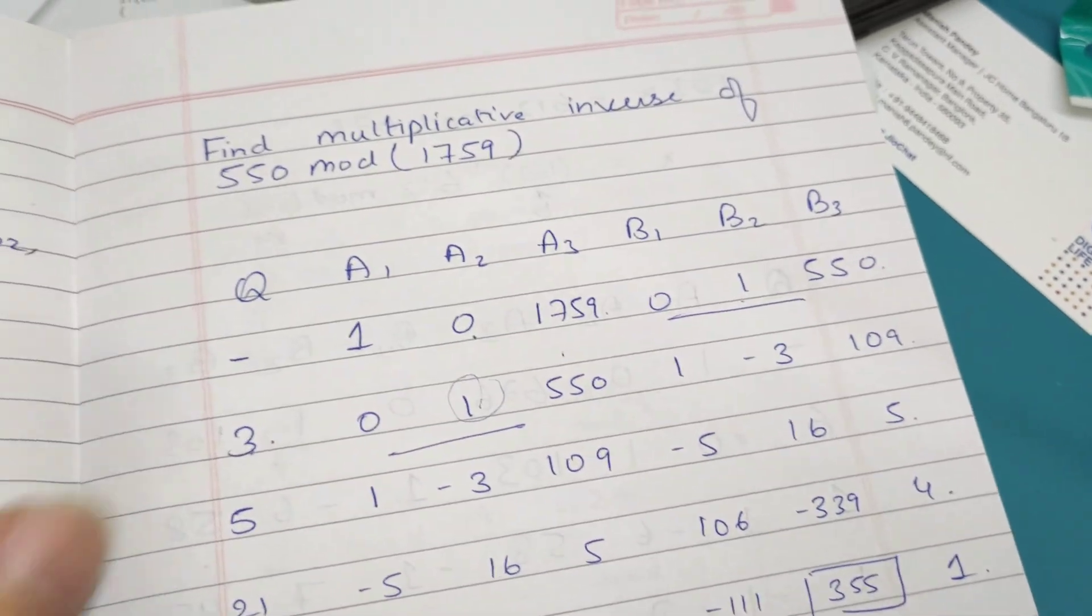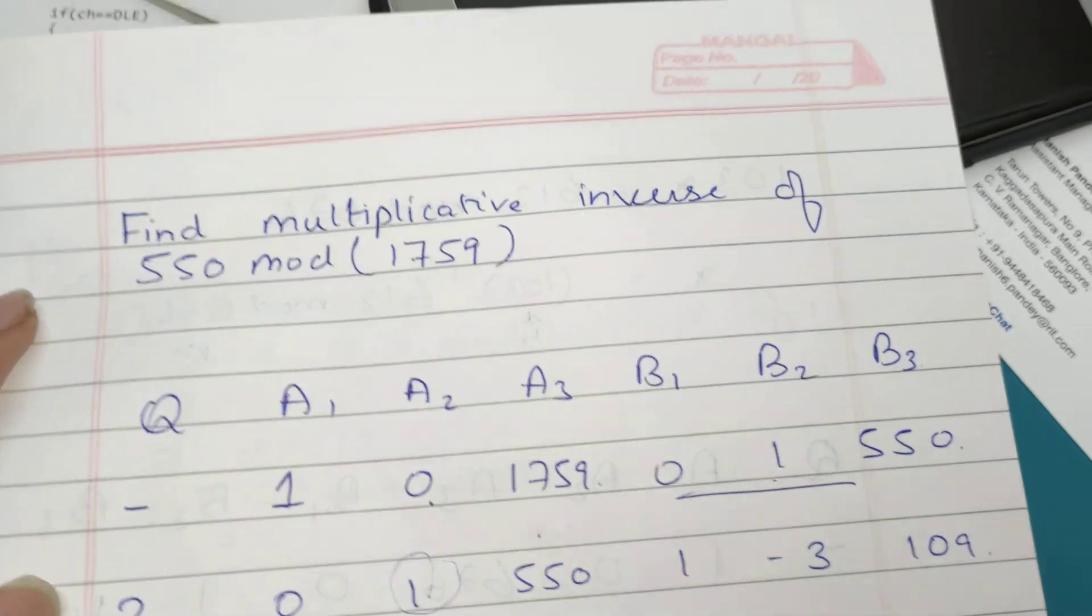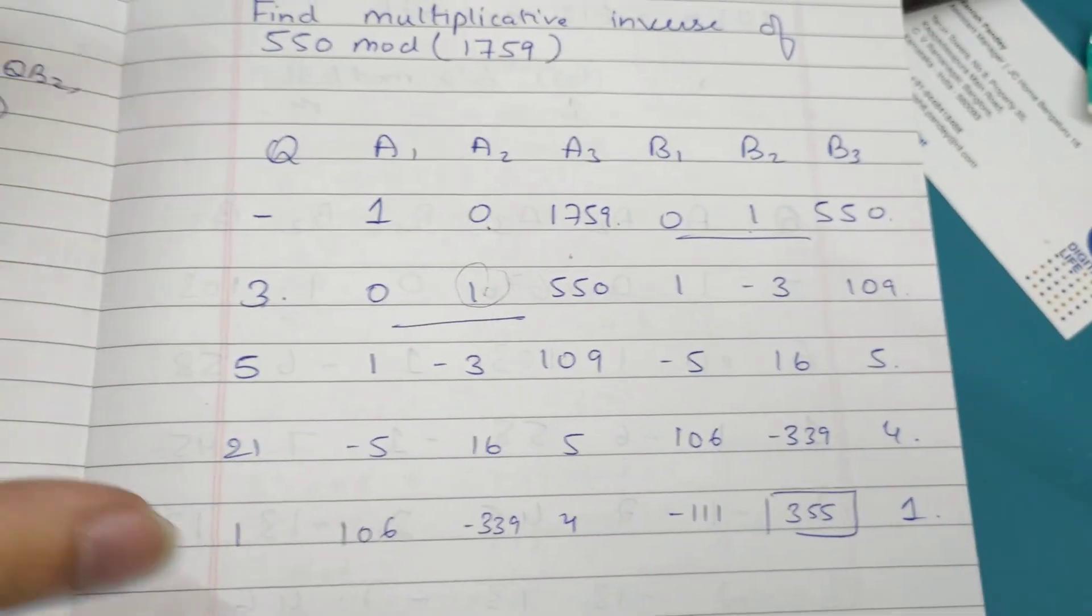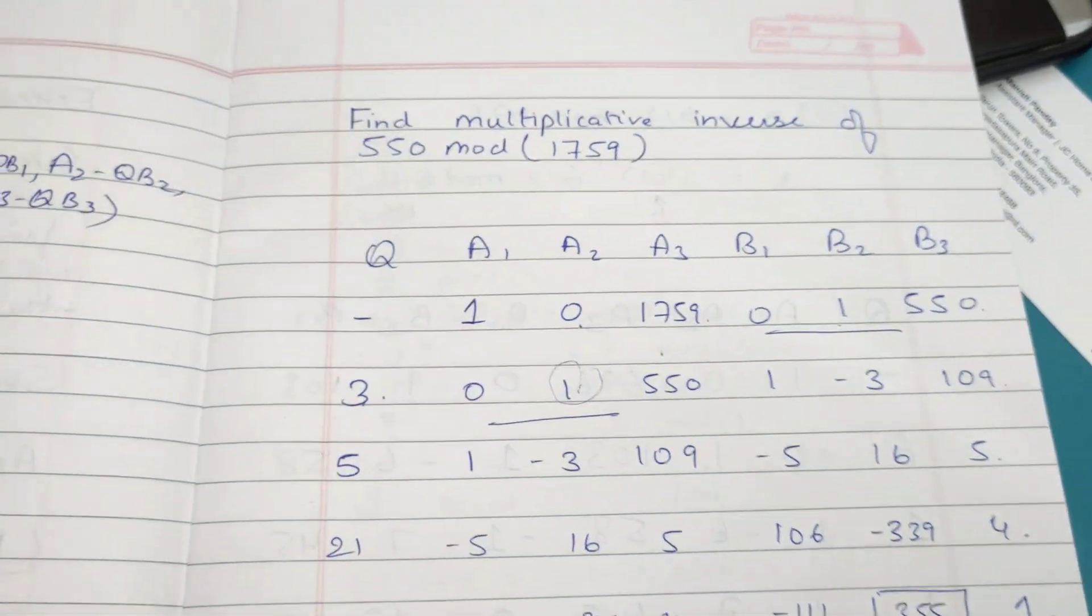This is the question we have: find multiplicative inverse of 550 mod 1759. This table you see is the format you need to use to find this.